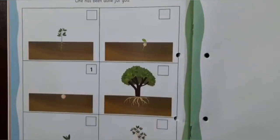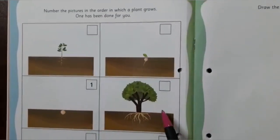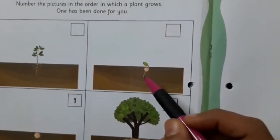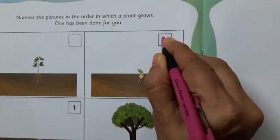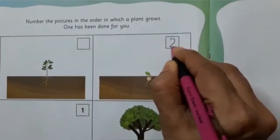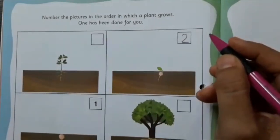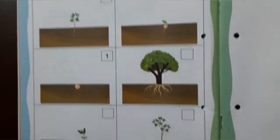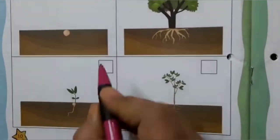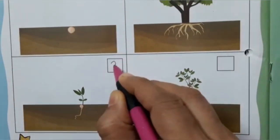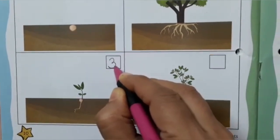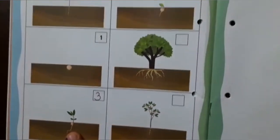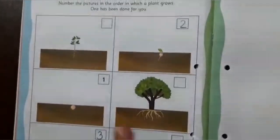Can you tell me which will come in number two? A tiny shoot — yes, so this is number two. In the square we are going to write number two. Now which will be number three? A small sapling — this will be in number three place, so here we are going to write number three.